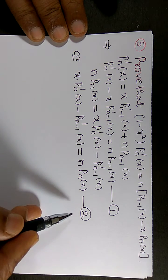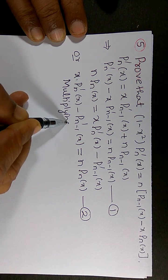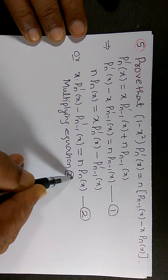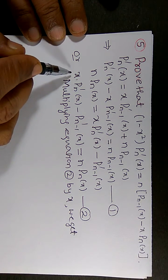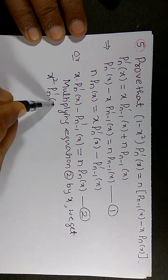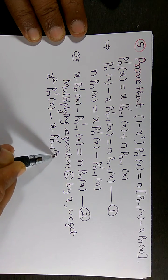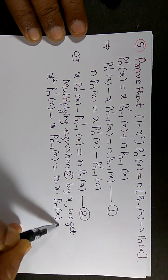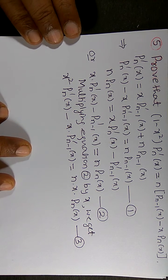Now I will multiply Equation 2 by x. So what we get: x squared into Pₙ prime of x minus x into Pₙ₋₁ prime of x equals n into x into Pₙ of x. I will call this Equation 3.